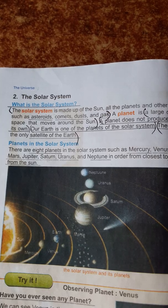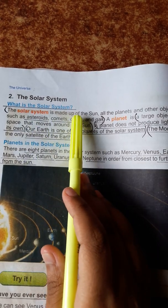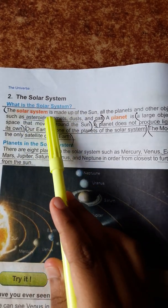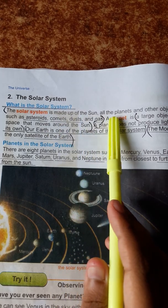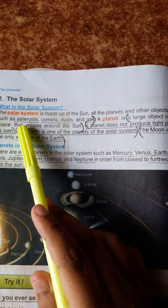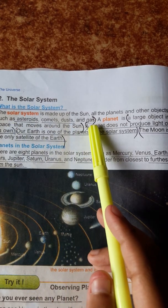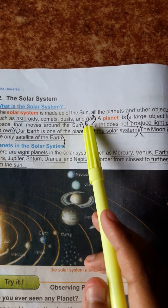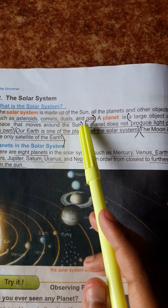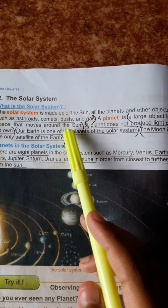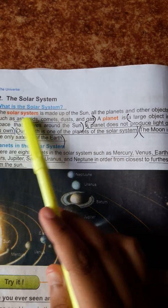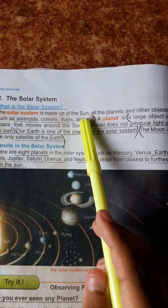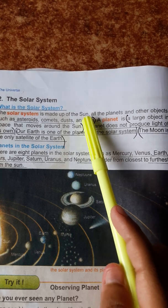The Solar System — shoru jagod. Universe-se shabche important hoche solar system. What is the solar system? The solar system is made up of the sun, all the planets and other objects such as asteroids, comets, dust and gas. Sun hoche solar system-er main point or center point — shoru jagod gothito.